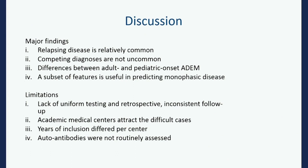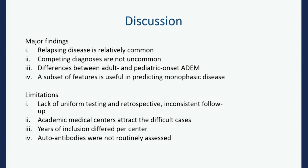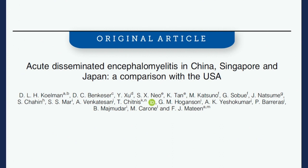Relapsing disease is relatively common — about a quarter of patients had a relapse. Sometimes the diagnosis was revised; competing diagnoses are not uncommon. Clinicians need to keep paying attention not just at the time of diagnosis but long-term. There are differences between adults and kids, and a subset of features may help with prognostication. A limitation is that these referral hospitals attract more difficult cases, and earlier cases were collected before aquaporin-4 and MOG antibody testing existed.